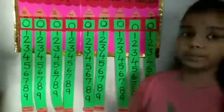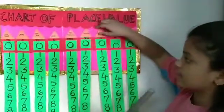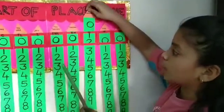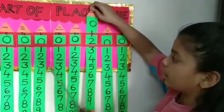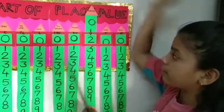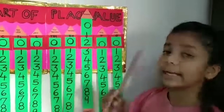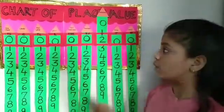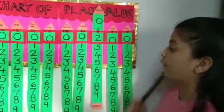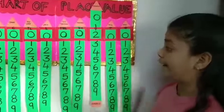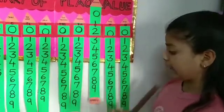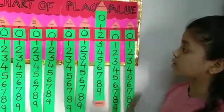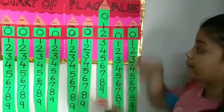So if I place the number two on the digit hundreds, so in the Indian place value system it is known as two hundred. While also in the international place value system it is also known as two hundred.